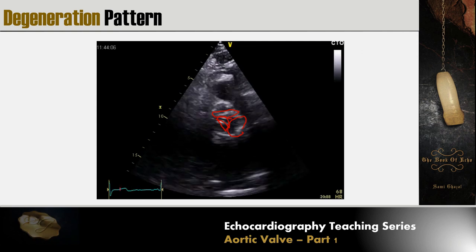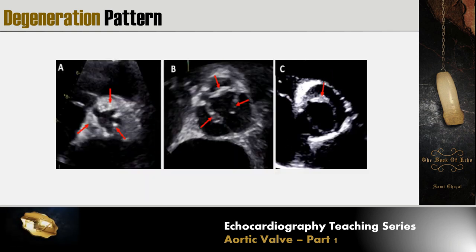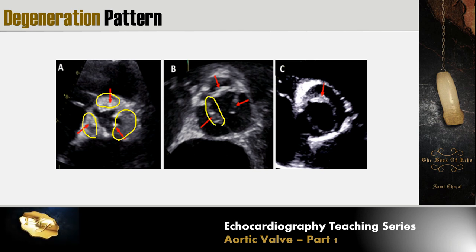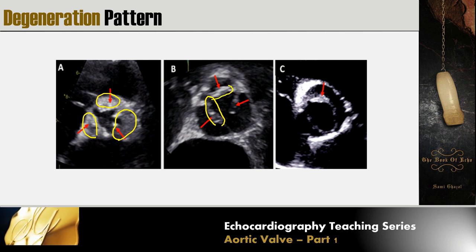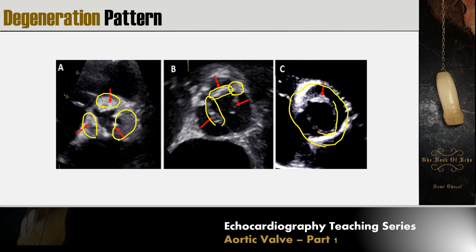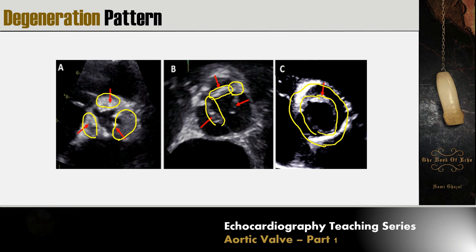Age-related degeneration involves calcification and thickening of the leaflet body itself. Rheumatic disease mainly involves the edge of the leaflet and the commissure — you'll see thickening and calcification at the leaflet edge as well as commissural fusion between leaflets. In bicuspid disease, you can see degeneration at the leaflet tip and may see a raphe at the fusion site between the two cusps. We will see more details in the coming examples.